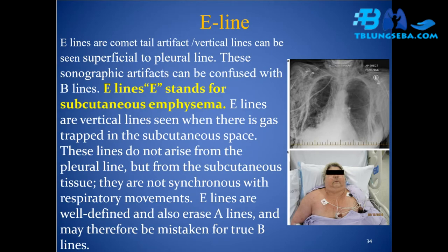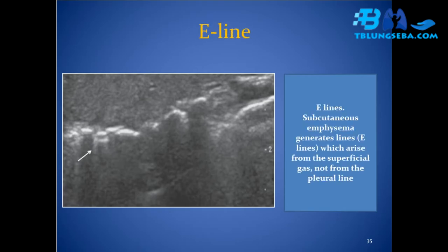E-line: E-lines are comet-tail artifacts / vertical lines seen superficial to the pleural line. These sonographic artifacts can be confused with B-lines. E stands for subcutaneous emphysema. E-lines are vertical lines seen when there is gas trapped in the subcutaneous space. They do not arise from the pleural line but from the subcutaneous tissue, are not synchronous with respiratory movements, and erase A-lines — and may therefore be mistaken for true B-lines.